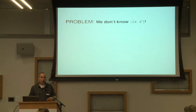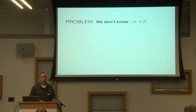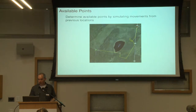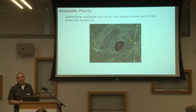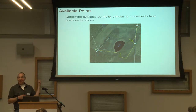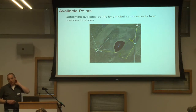One problem is we don't know how an animal actually would move in a homogeneous landscape. So how would you actually simulate these points? It's early — this might be a good time to talk to your neighbor. See if you can come up with an idea. How would you generate available points? Think about how your critter might move. What would you do?